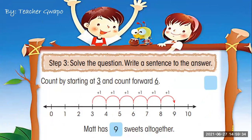Step number three: solve the question. Write a sentence to the answer. Count by starting at three and count forward six times. So we start from number three: three plus one is four, four plus one is five, five plus one is six, six plus one is seven, seven plus one is eight, eight plus one is nine. So Matt has nine sweets all together.